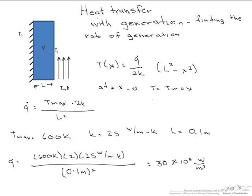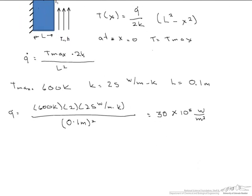Why is it per meter cubed? Well, generation is a volumetric phenomenon because it happens within that volume. So our units are going to be watts, which is joules per second, per meter cubed.